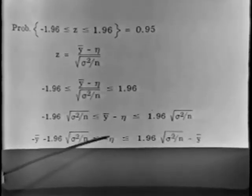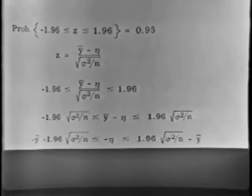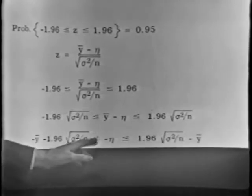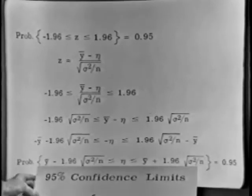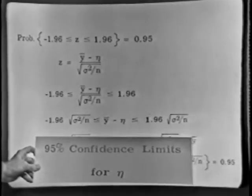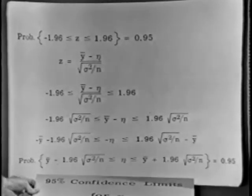That leaves y-bar minus eta in the middle. I'll subtract y-bar from both sides of the inequalities, leaving minus eta in the middle. I'm now going to change the sign of eta — when you change the signs of inequalities, everything flips over: this material appears on that side, and the inequalities turn about. Putting back in the curly brackets, we have the probability that eta will be between these two limits is equal to 95%. These are, in fact, the 95% confidence limits for eta.